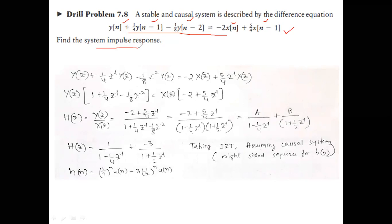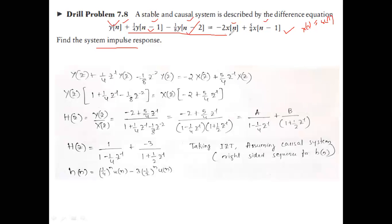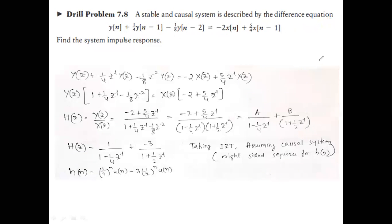There are two ways to find the impulse response from the difference equation. First, in the time domain, substitute x(n) = δ(n) — if input is an impulse, output is the impulse response. But due to recursion, the output depends on previous outputs, giving infinite terms in the time domain, which is very slow.